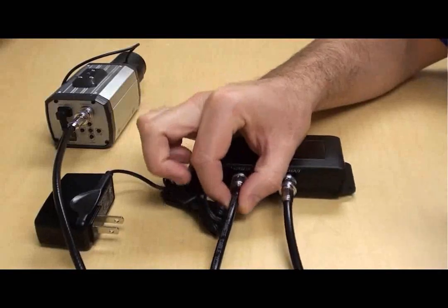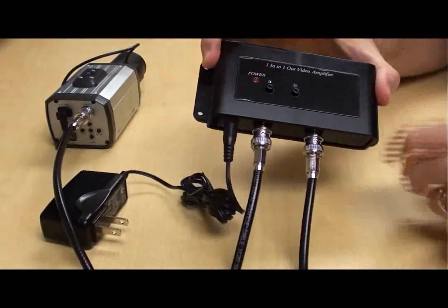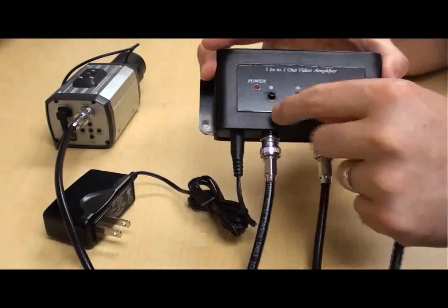The video cable runs out from the camera into the amp. Then the cable runs out of the amp for up to 3000 feet and connected to a video input device such as a monitor.